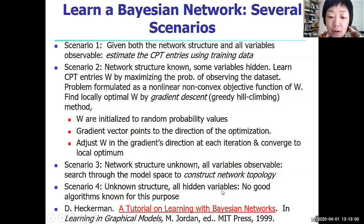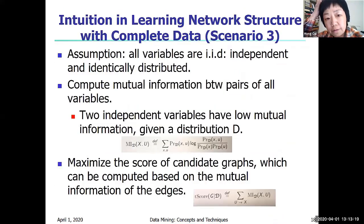All variables are given. You have a set of variables, you don't know how they are connected and many of those variables have missing values that you're not observing them. So it's very challenging. Nobody has a very good solution for that. So scenario three, when we don't have the network structure but we have the variables, we need to learn the network structure.